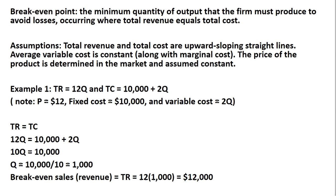If the firm produces more than 1,000 units of output, its profits would be positive. And right at 1,000 units of output, the firm breaks even — economic profit is zero. If you wanted to get the break-even sales, take this 1,000 and plug it into the total revenue function, and we see that break-even sales or break-even revenue occurs when the firm sells $12,000 worth of goods.